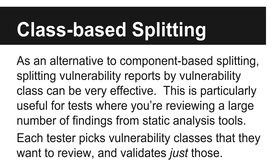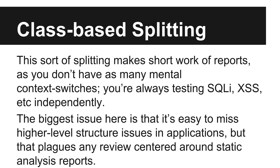A second approach is to split the project up by vulnerability class. This is typically done when reviewing a large number of findings from static analysis. Each tester chooses a few vulnerability classes and just looks at those. This personally is my favorite approach for reviewing static analysis findings — there are many fewer mental context switches. You're looking at SQLI, SQLI, SQLI, then XSS, XSS, XSS. It's almost meditative, cranking through thousands of similar findings and finding a good rhythm. The big issue is that it's easy to miss high-level structural problems, though you'll have the same basic issue with any approach centered around static analysis reviews.